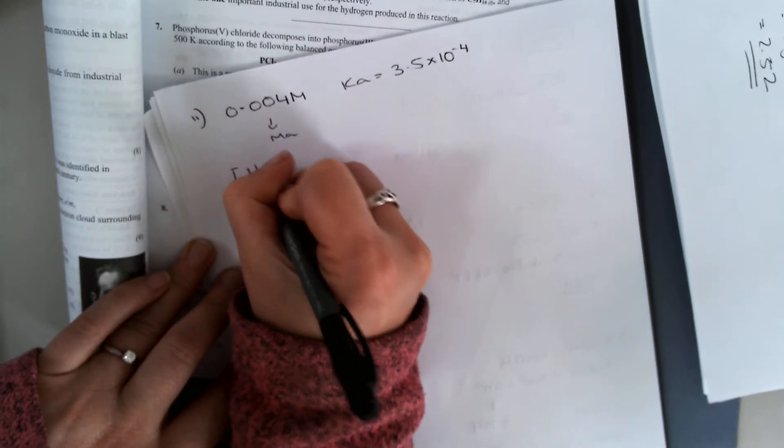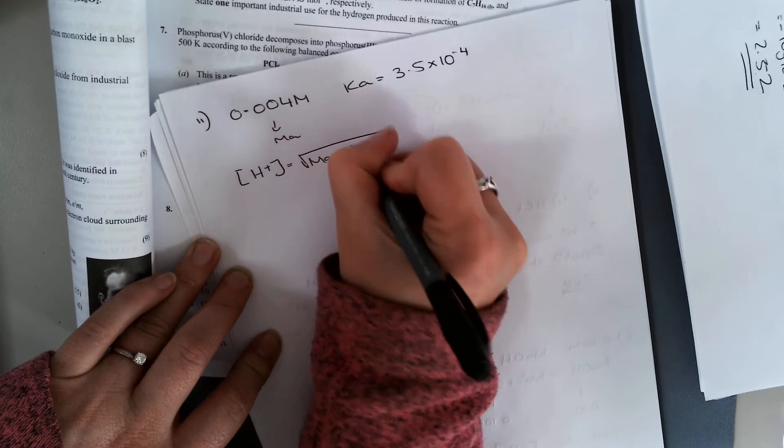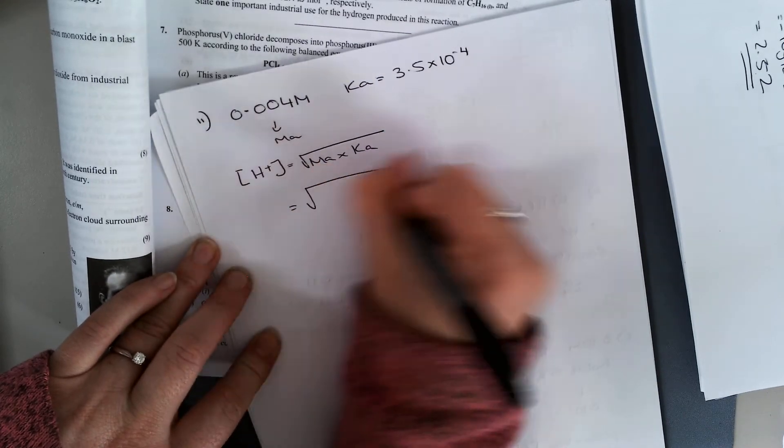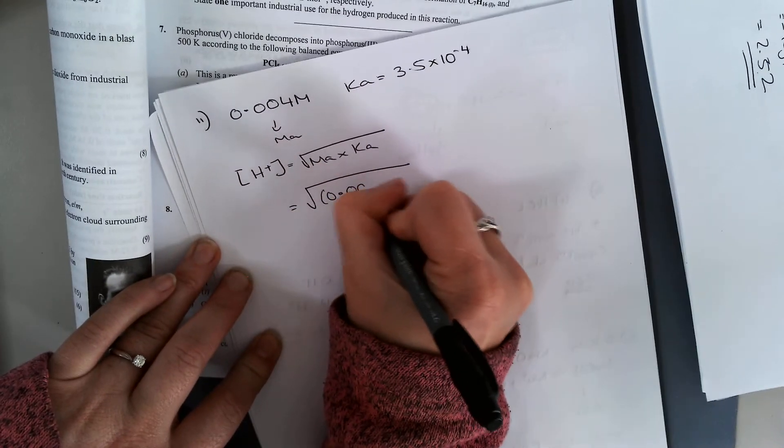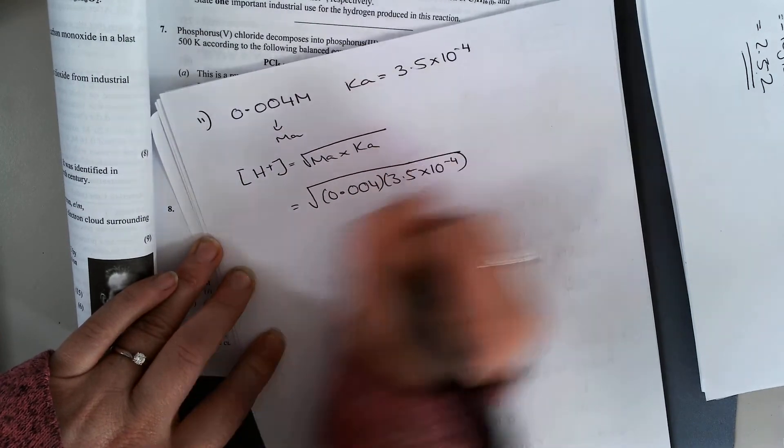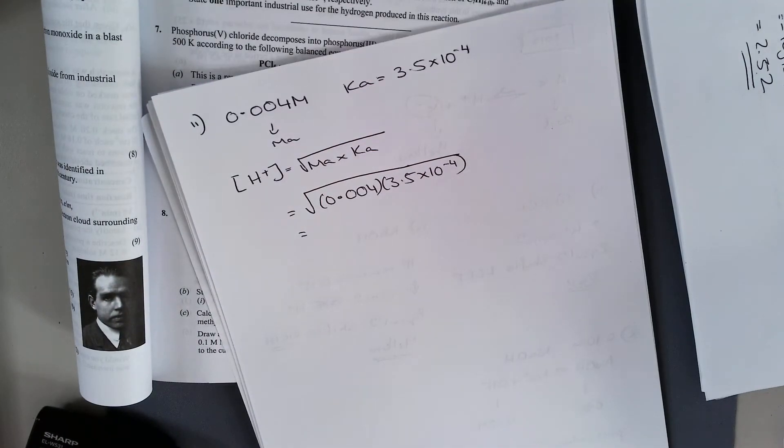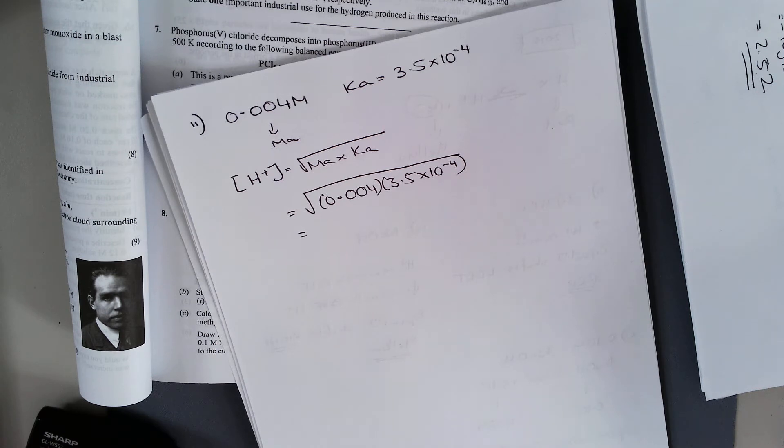My concentration of H plus ions equals the square root of Ma by Ka. That's the square root of 0.004 by 3.5 by 10 to the minus 4. And that gives me an answer of 3.5 by 10 to the minus 4.